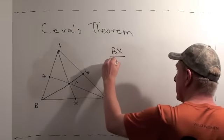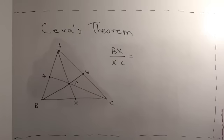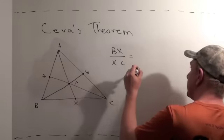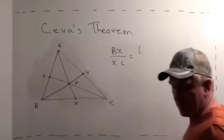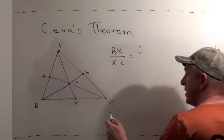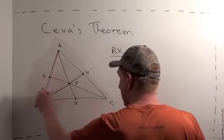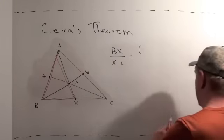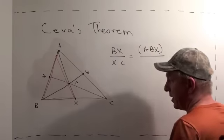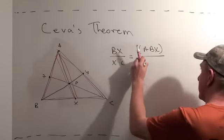Alright, so we're going to try to understand what BX over XC is. Okay, we're going to assume the cevians are concurrent, and we're going to prove this ratio equals 1. BX over XC is actually equal to the area, and I'm going to adopt the Geometry Revisited convention for area of a triangle by just putting in parentheses. BX over XC is equal to the area of the triangle ABX over the area of the triangle AXC. And let me just take a quick second to explain why that's true.